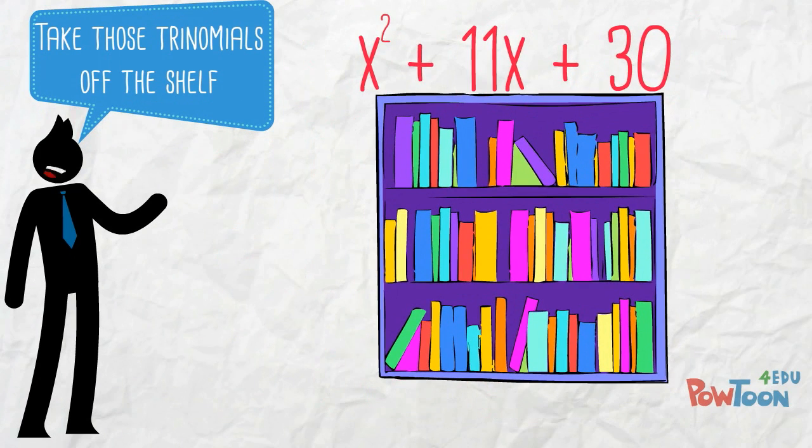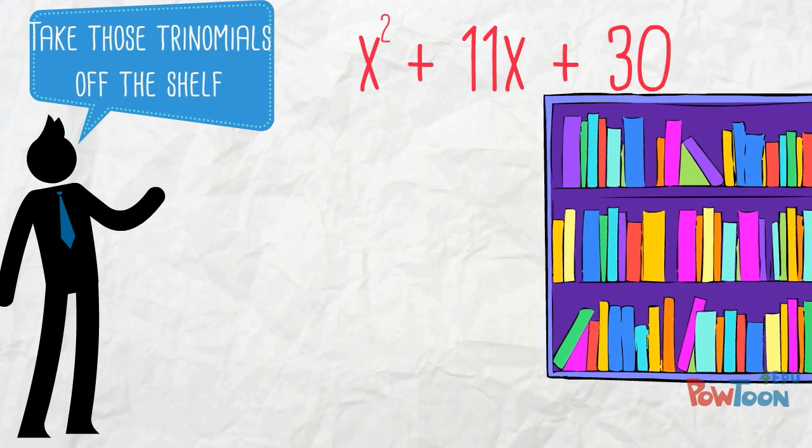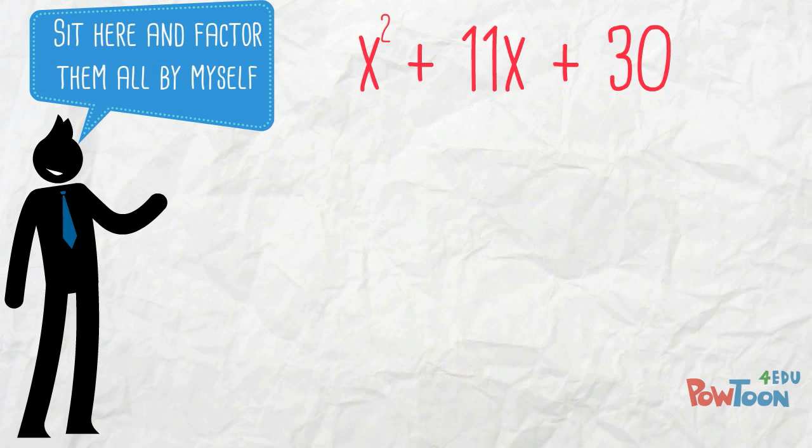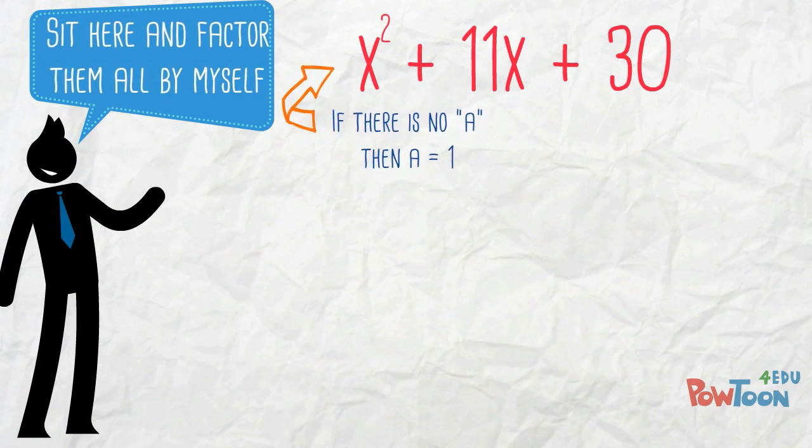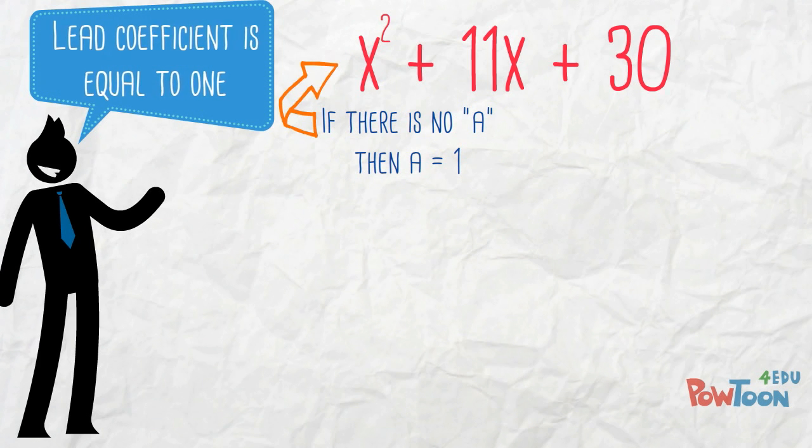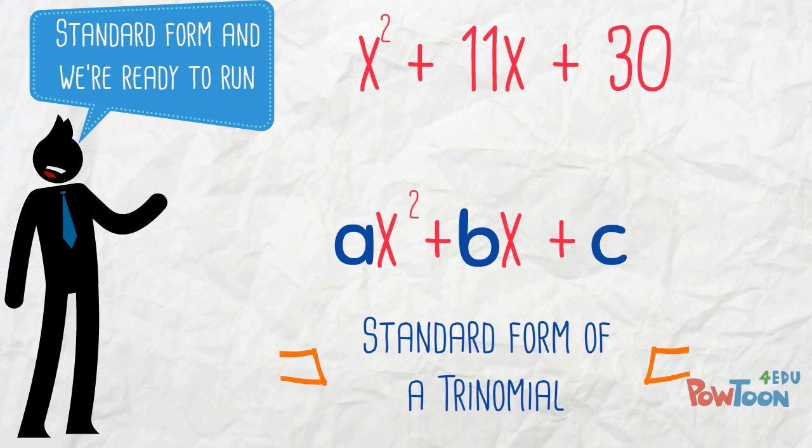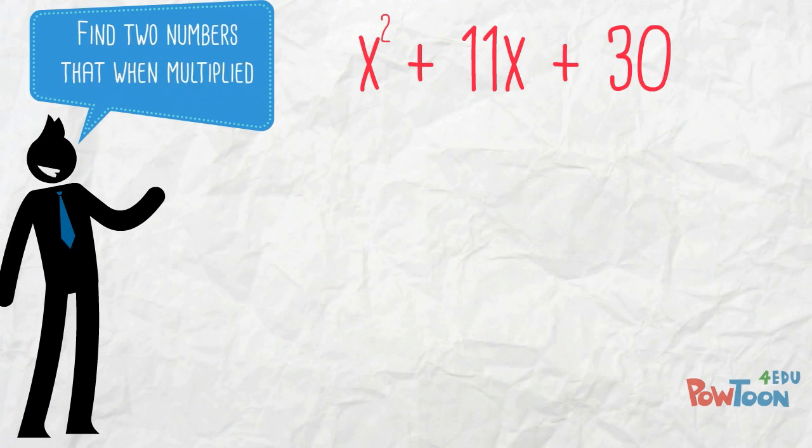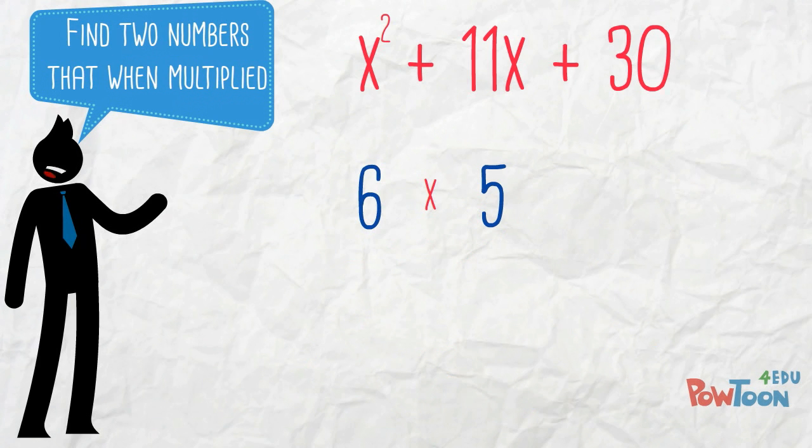Take those trinomials off the shelf, sit here and factor them all by myself. Lead coefficient is equal to 1, standard form and we're ready to run. Find two numbers that would multiply.